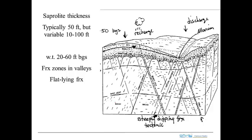We can broaden out and look at the landscape itself. We have the stream here and the uplands. The saprolite — also called regolith — is here, and here's the fractured rock with sub-horizontal and steeply dipping fractures. This is the transition zone between the unweathered rock and the highly weathered saprolite. We also see a vertical fracture zone here with the stream localized in that zone.